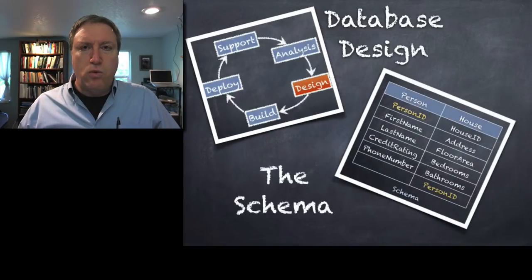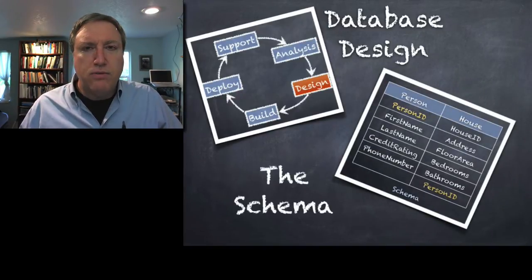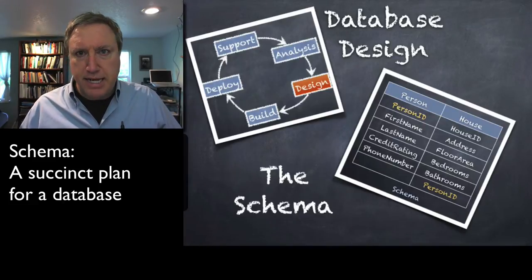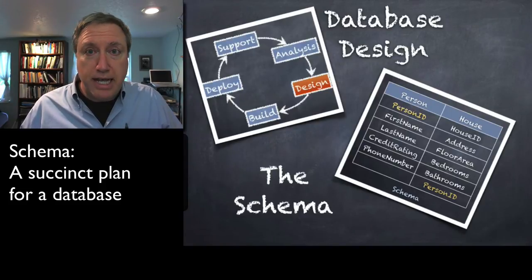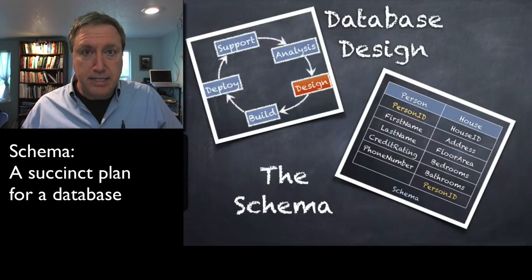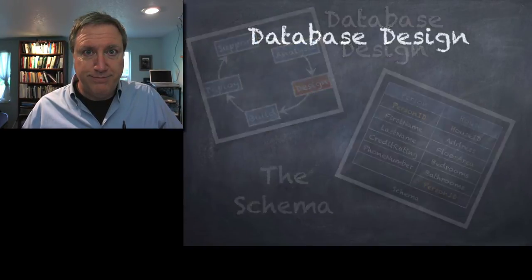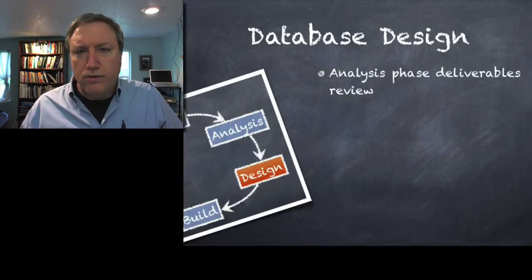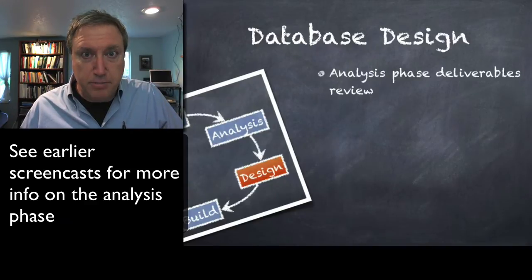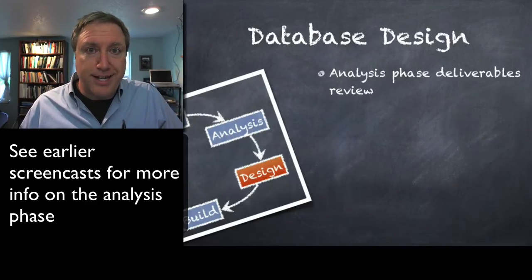Specifically, we're going to look at the use of something called the schema, which is a succinct plan of all of the entities, attributes, tables, and relationships in a database design. We're going to start with a review of the deliverables that come out of the analysis phase — the business rules and the entity relationship diagrams.